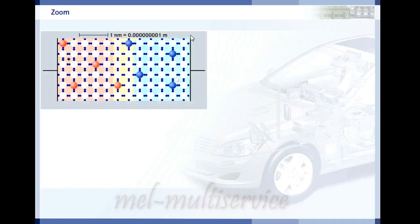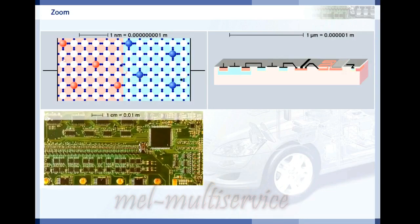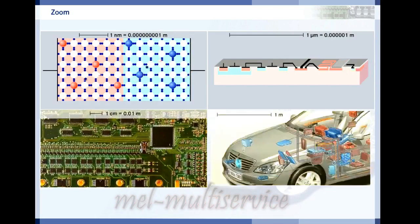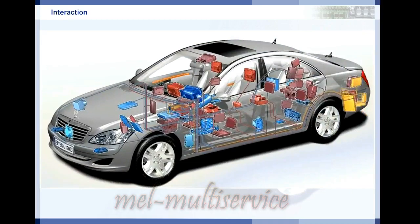In the first part of the program, you got to know the basic electronic components and saw how huge numbers of them are packed into integrated circuits, how these in turn are put together in control units, and how control units are connected together to form the electrical system of a vehicle.